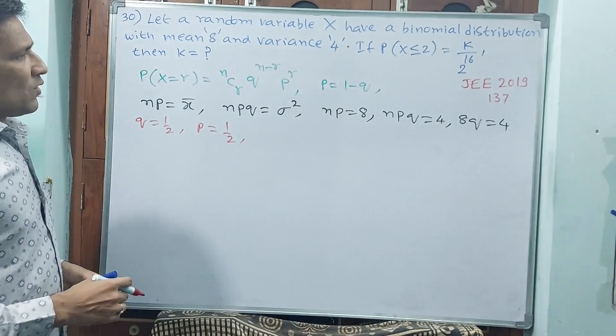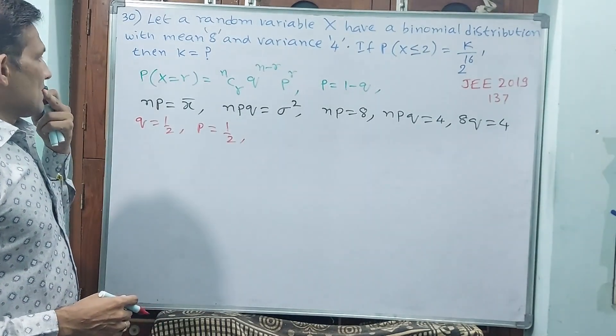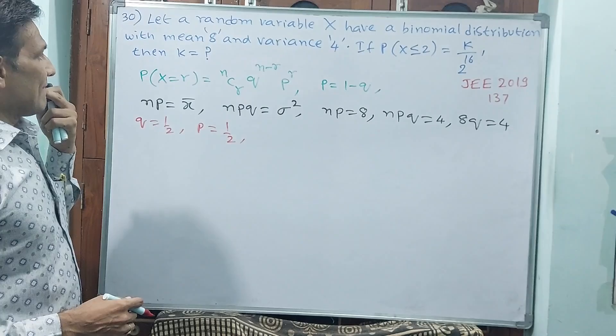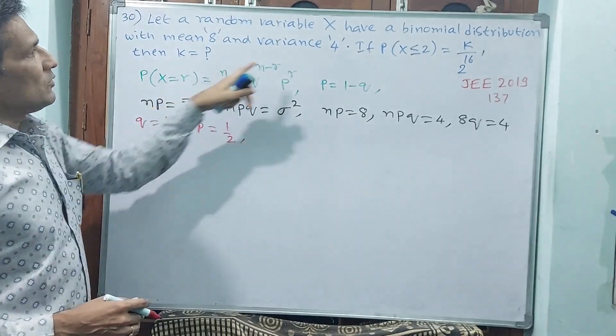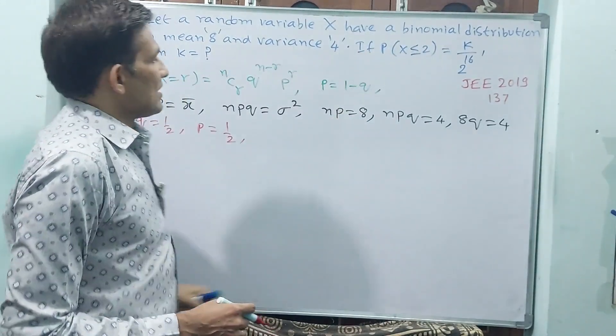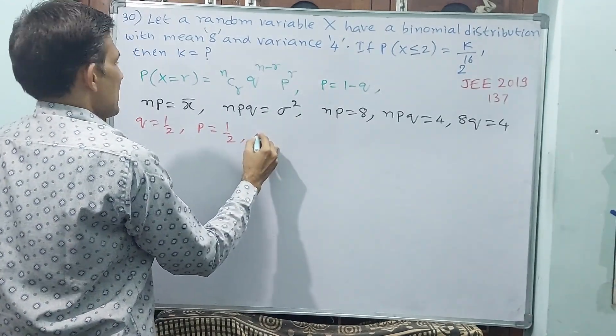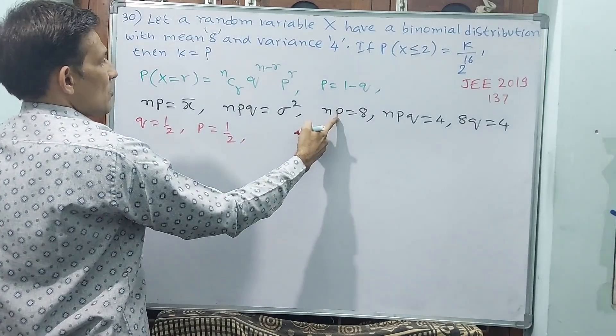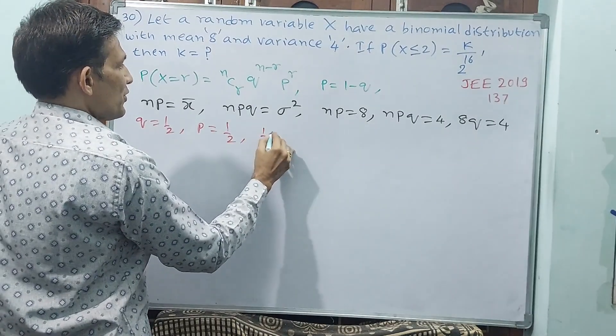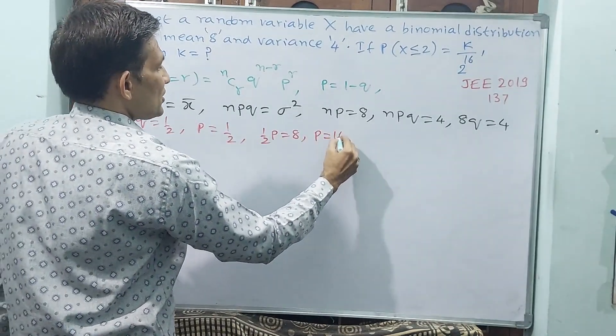Now what else? We require r value, we will get that, but n value we have to get. See, np = 8 means what? p is 1/2. That means n × 1/2 = 8, therefore n = 16.